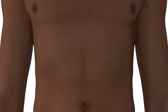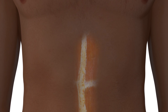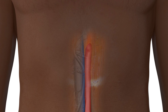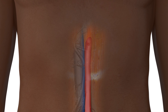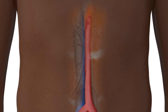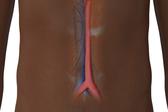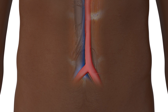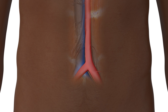The abdominal aorta is a retroperitoneal structure. It enters the abdominal cavity through the aortic hiatus. It is widest at the proximal region and is narrowest at its distal end before it bifurcates into the left and right common iliac arteries.